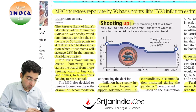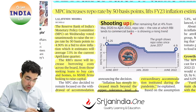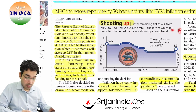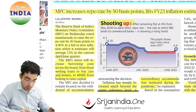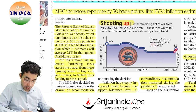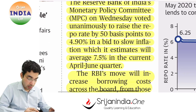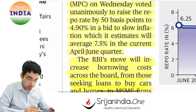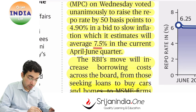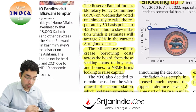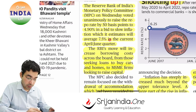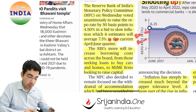The repo rate — the rate at which RBI lends to commercial banks — remained flat at 4 percent from May 2020 to April 2022, and is now showing a rising trend. RBI has raised it to 4.9 percent. Repo and reverse repo move in tandem. The MPC voted unanimously on Wednesday to raise the repo rate by 50 basis points to 4.9 percent, to slow inflation which it estimates will average 7.5 percent in the current April-June quarter. This high inflation deteriorates savings and puts salaried persons and pensioners at a disadvantage.